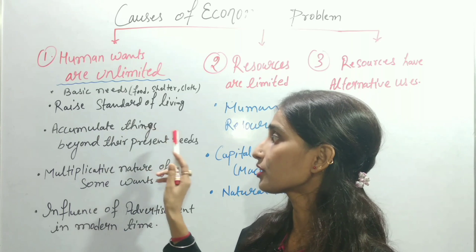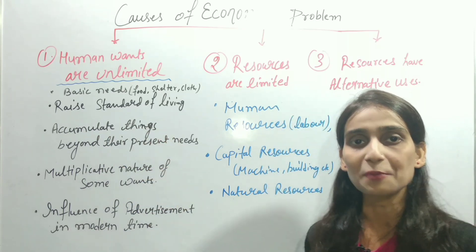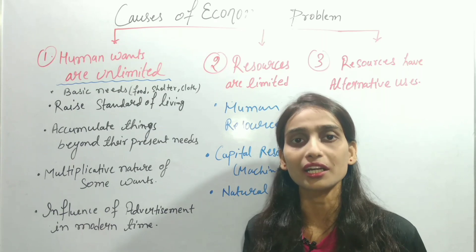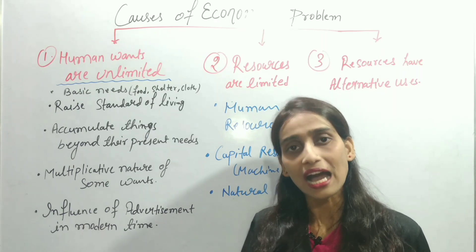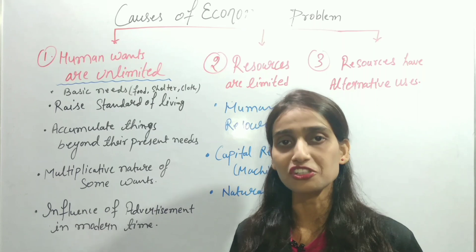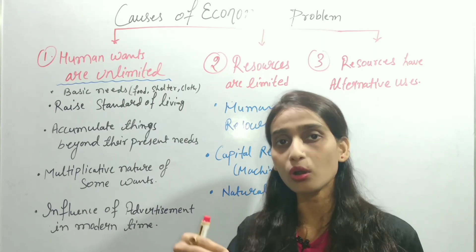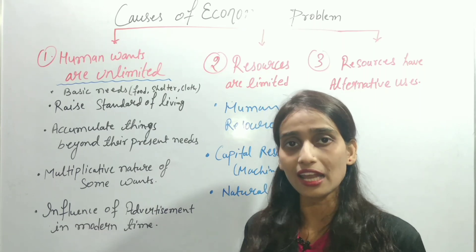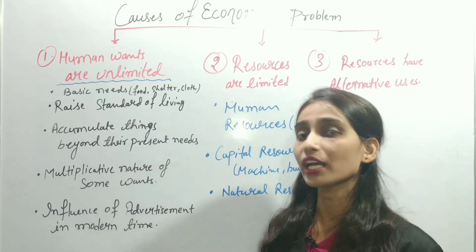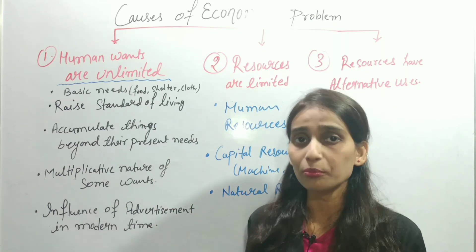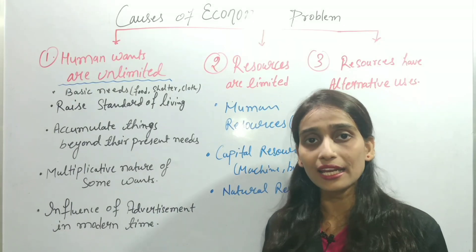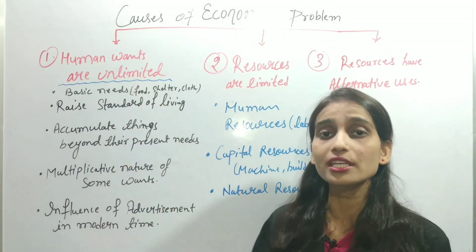Third, people accumulate things beyond their present needs. Nobody wants to live a hand-to-mouth existence — just enjoying today and not thinking about tomorrow. Everyone wants to use things in the present but also save for tomorrow. So people accumulate things for the future, and this tendency is also unlimited.